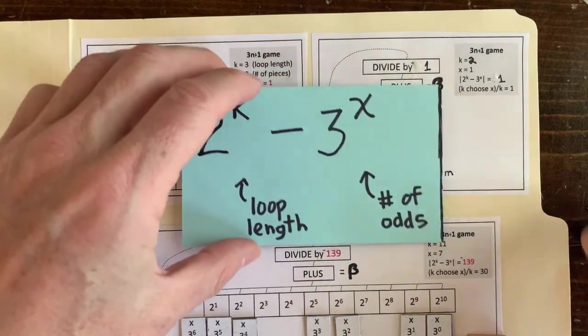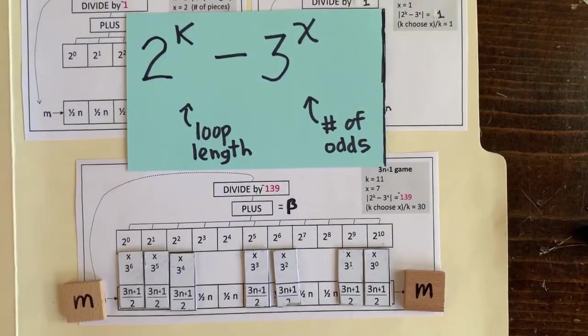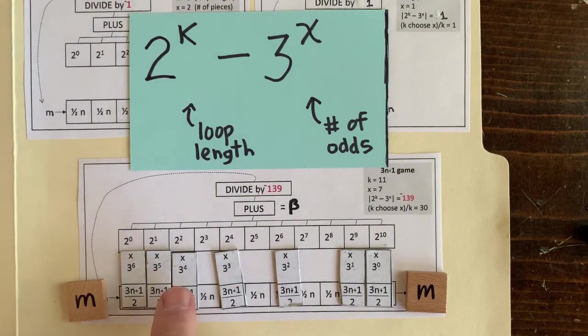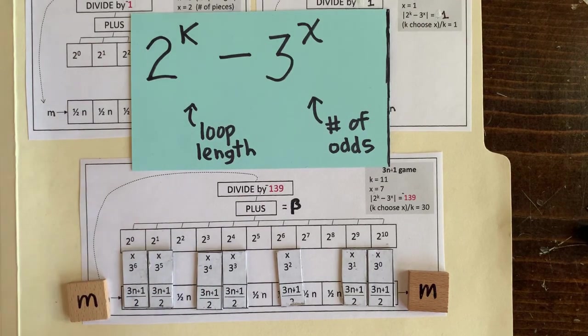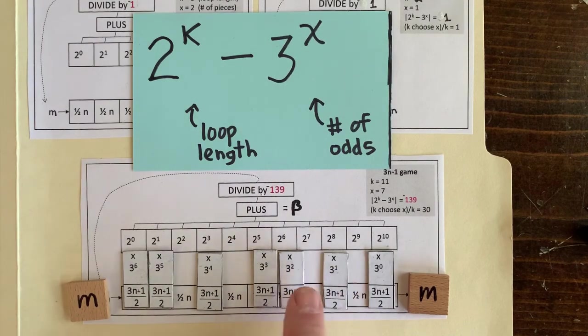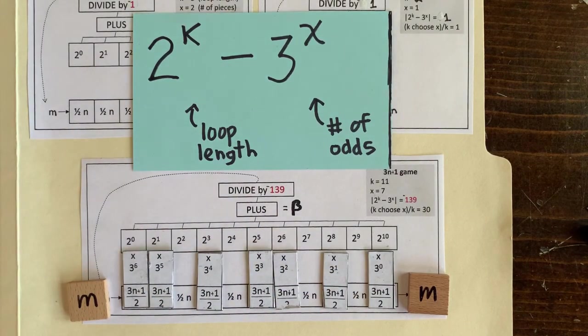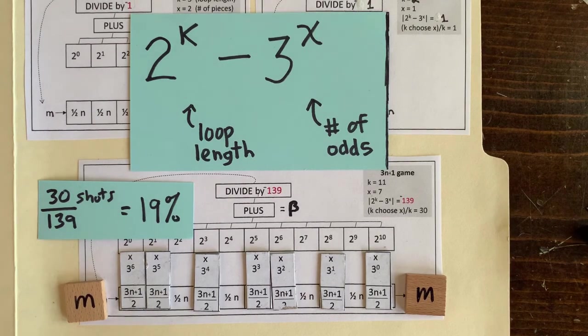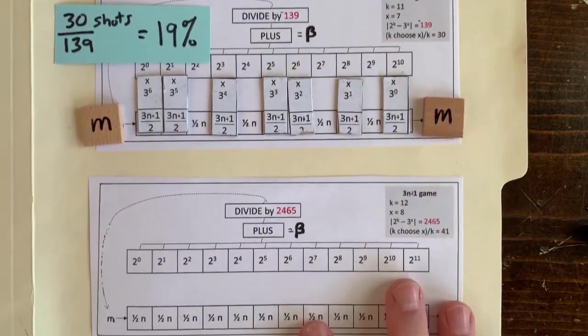So let's go back to the k equals 11 computer with x equals 7 pieces, and 2 to the k minus 3 to the x equals negative 139. If we keep moving the pieces around, what's the chance we'll generate a multiple of 139? For each configuration of pieces, we have a small chance. So how many configurations are there? There's 11 choose 7, which is 330. But we have to divide that by 11, because any shift of the pieces is just going to be the same loop. So even though we have a small 1 over 139 chance, we get 30 shots at it. So it seems like we've got about 30 over 139 equals 19 percent chance of finding a valid loop of length 11.